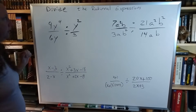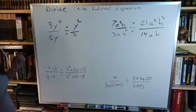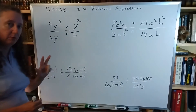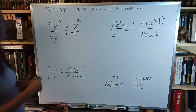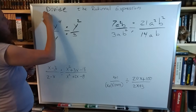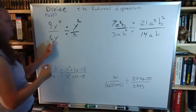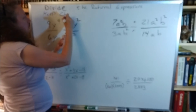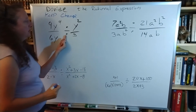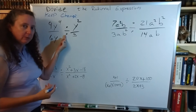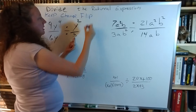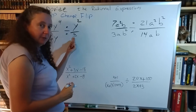Division with rational expressions. With division, there are three things to keep in mind: you want to keep the first fraction the same, you want to change the divide by into multiply by, and you want to flip the fraction that's after the divide by sign.